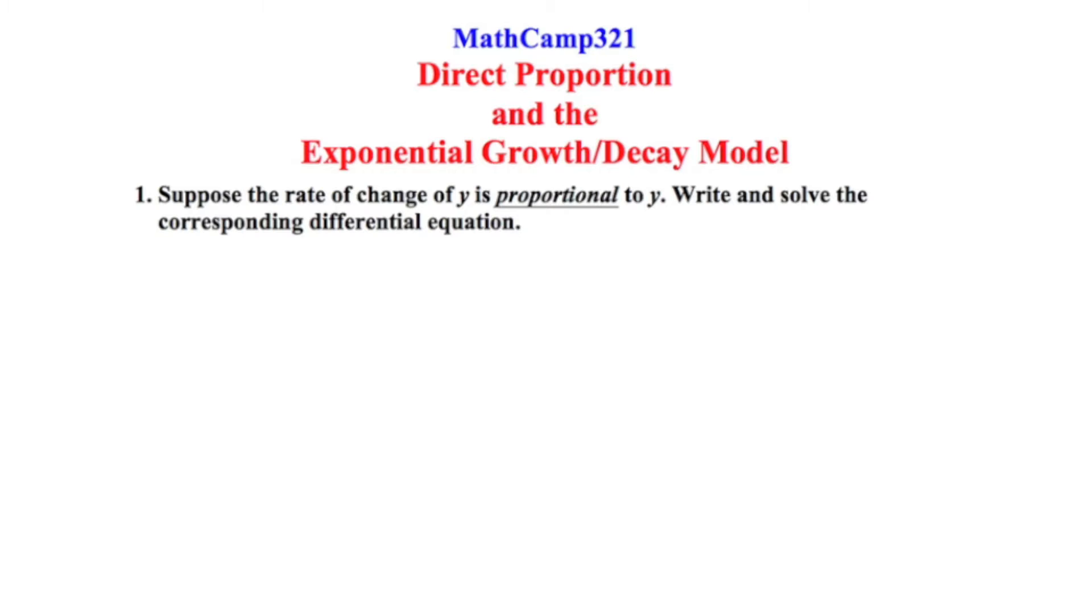The rate of change in a calculus course means derivative. We want to find the rate of change of y with respect to time. So the left side of my differential equation is going to be dy/dt and it says it's proportional to y itself. When you have a question in which something is proportional to something else, we're going to use this variable k which serves as the constant of proportionality. So dy/dt is equal to ky or k times y.